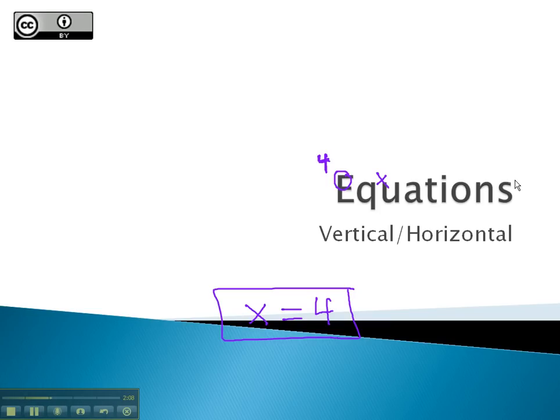If we can remember that vertical and horizontal lines are always the variable equals its intercept, we can quickly match a line to its equation.